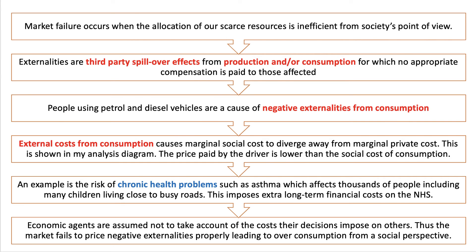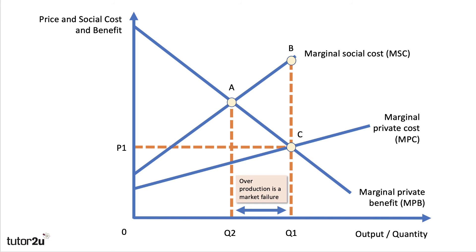So build your answer up and support it with a diagram. External costs damage third parties, but the consumer and the producer don't necessarily have to pay for that, meaning that output will be too high. Over-production — Q1 versus Q2 — is a sign of market failure, and in the case of negative externalities the market price, P1, will be too low in the market.